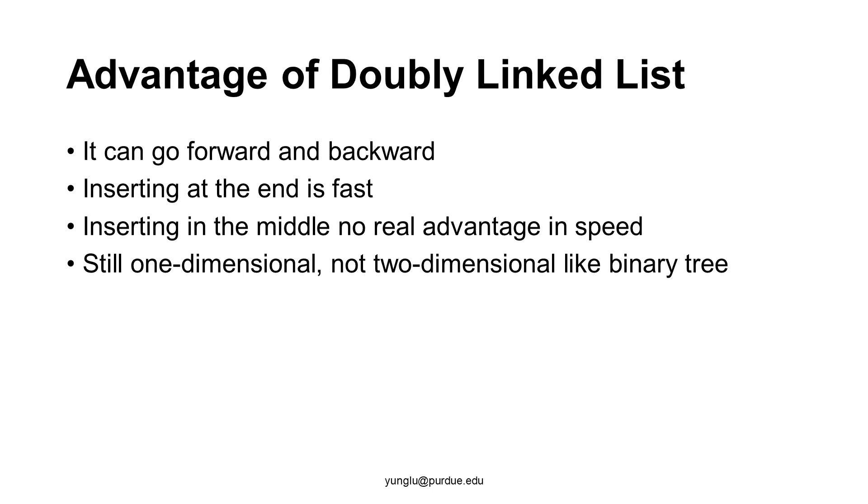Using the tail pointer, inserting a node at the end is much faster because it is not necessary to go over the entire linked list to find the last node in the linked list. However, a doubly linked list has no advantage when inserting a node at the middle. From the head or the tail, we still need to go through many nodes in order to find the middle of the linked list. Even though each node has two pointers, a doubly linked list is still a one-dimensional data structure. It does not have the advantages of binary tree that can divide into left part and right part.